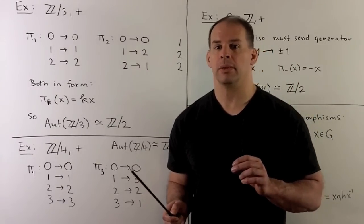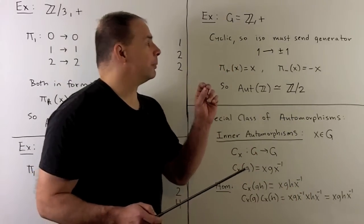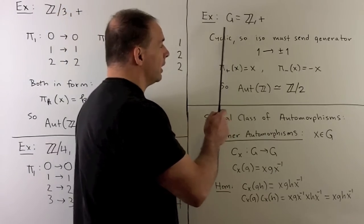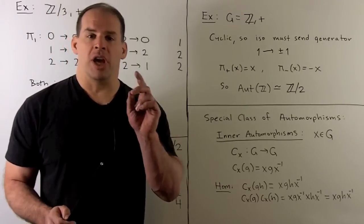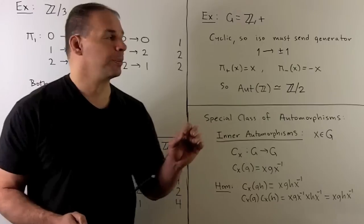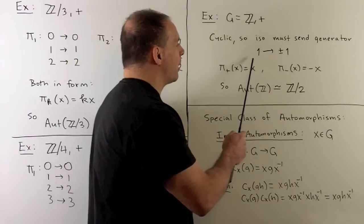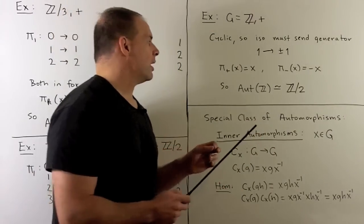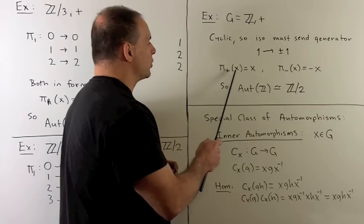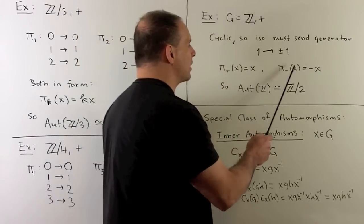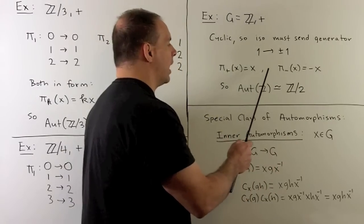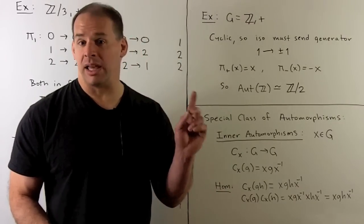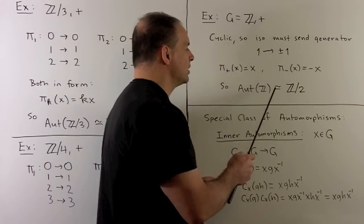This formula pi_k(x) = kx is the beginning of the automorphism group for modular integers, but we'll save that for another time. For an infinite example, consider the integers under addition. The integers are cyclic, so a generator must be sent to another generator. That means everything is determined by where 1 goes, and it must go to +1 or -1. So Aut(Z) is just Z mod 2.